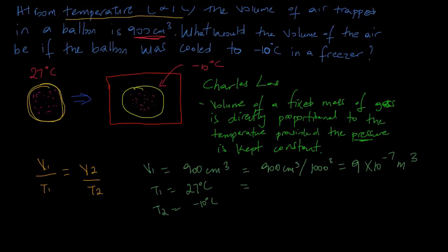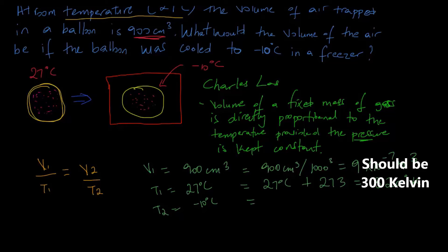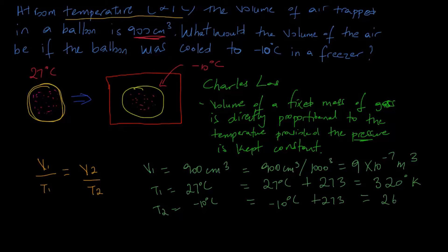To convert from degrees Celsius to degrees Kelvin, we simply add 273 to the value. So we have 27 degrees C plus 273, which works out to be 300 degrees Kelvin. Similarly, minus 10 degrees C plus 273 works out to be 263 degrees Kelvin.